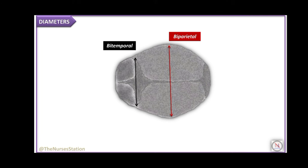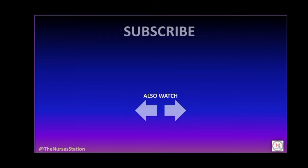This completes the fetal skull. In this video, we discussed the fetal skull — its regions, bones, sutures, fontanelles, and the diameters.